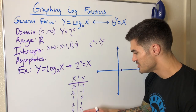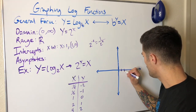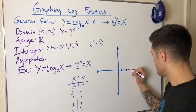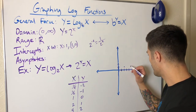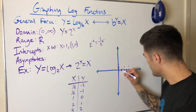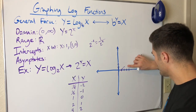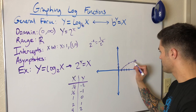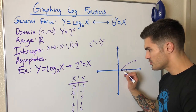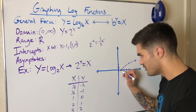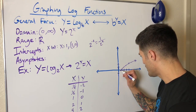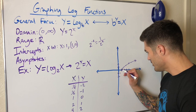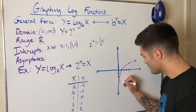As x increases, y increases as well. At x equals two, y equals one. At x equals four, y equals two. So the graph is doing something like this — curving upward slowly. Now let's look at what happens below x equals one. At x equals one-half, y is negative one. At x equals one-fourth, y is negative two. We're getting really small, getting closer and closer to the y-axis.